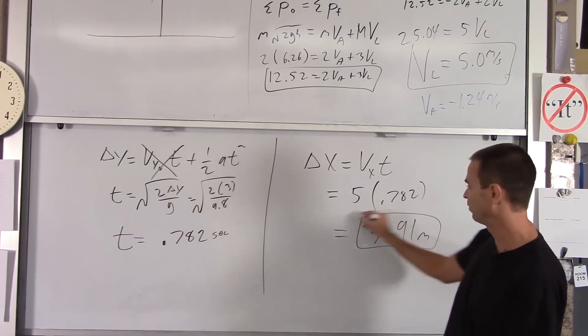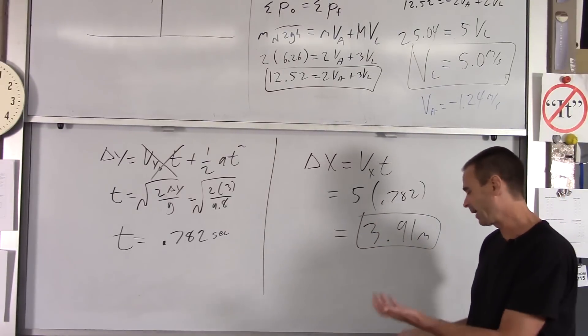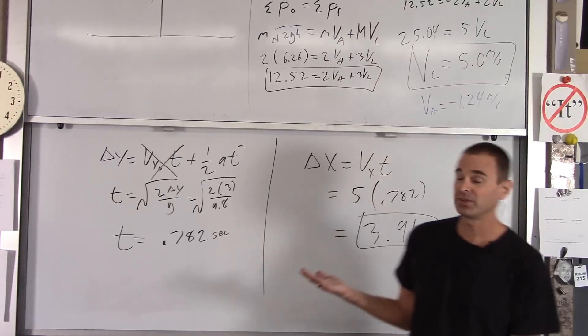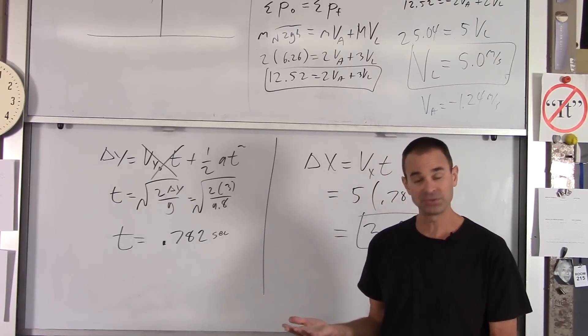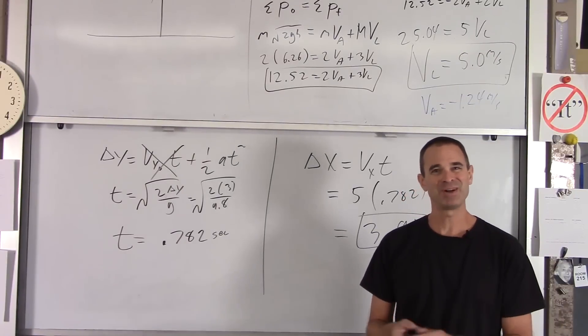Now, by the way, I kept the numbers in the calculator. That's why if you take this times this, you won't get exactly that. I kept the numbers in the calculator and got that. So there's an example of using conservation of energy and momentum to solve a problem regarding the motion of multiple objects in the system. Thank you very much.